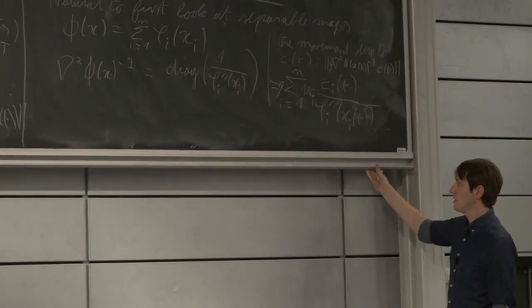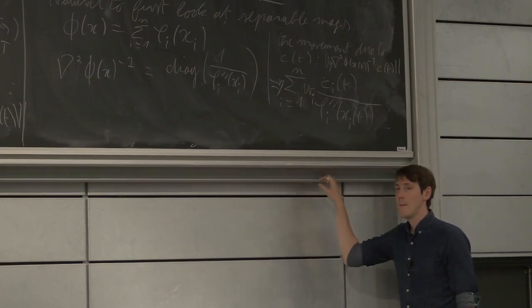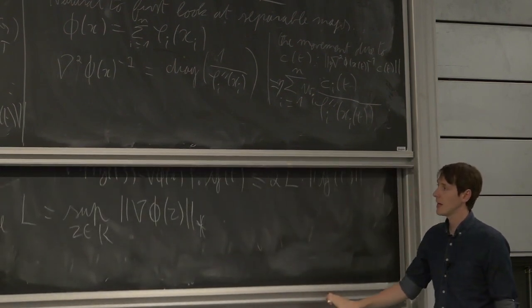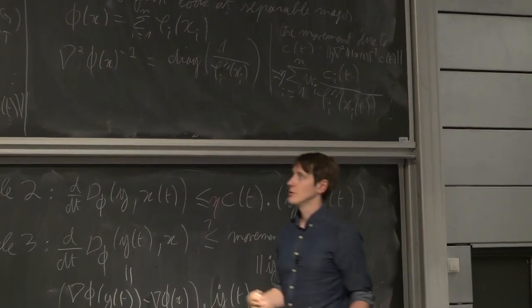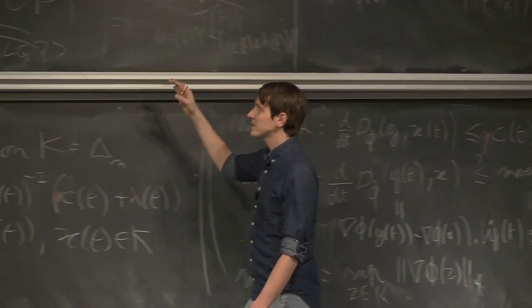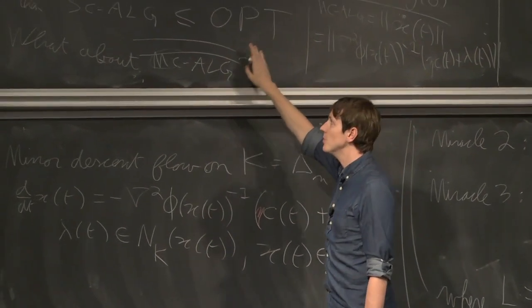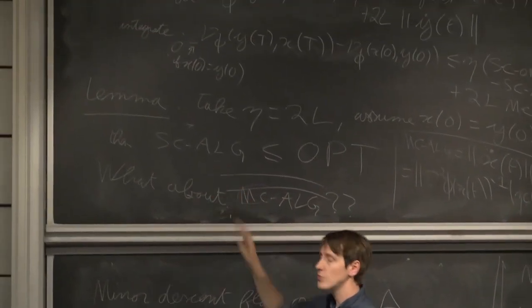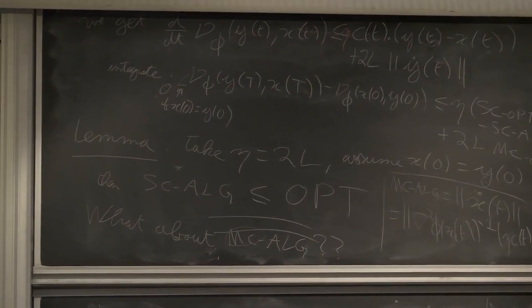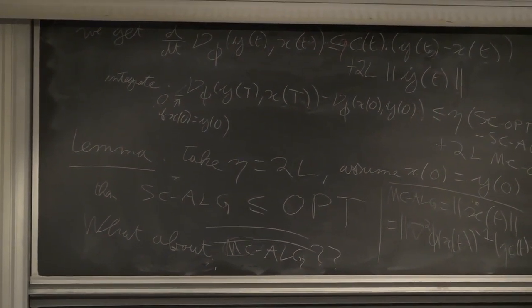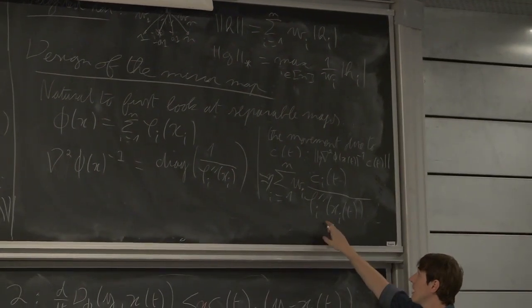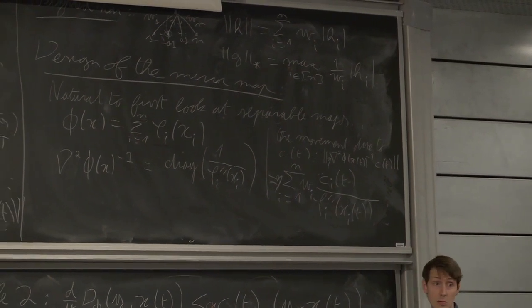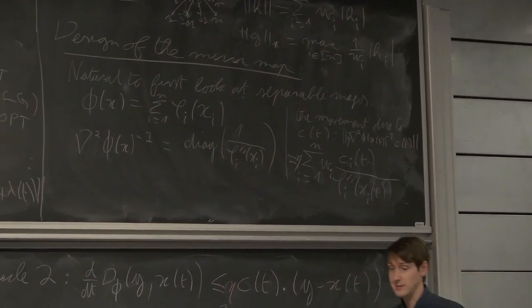The whole magic of mirror descent is that you don't need to think about opt anymore — you can simply use the service cost of the algorithm as a proxy for opt. The service cost is just the sum of c_i(t) * x_i(t). So let's design phi_i'' so that this movement cost equals x_i(t) * c_i(t).